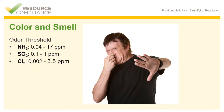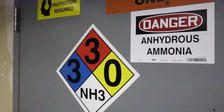Ammonia has a very low odor threshold. This is a great characteristic of ammonia — you could smell ammonia long before the concentration is harmful to your health. For example, you could smell ammonia around 5 parts per million, which is only one-fifth of the permissible exposure limit for ammonia in California. More on exposure limits to come.